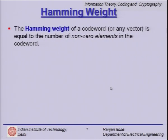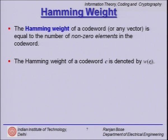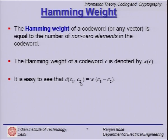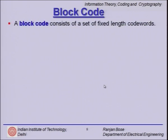We also defined Hamming weight: the Hamming weight of a codeword or any vector is equal to the number of nonzero elements in the codeword. It is denoted by w(c). We can see that the Hamming distance between c1 and c2 is nothing but the weight of c1 minus c2, because c1 minus c2 identifies where they differ.